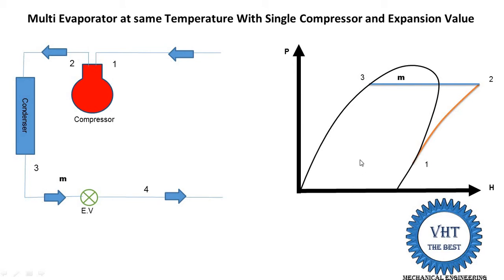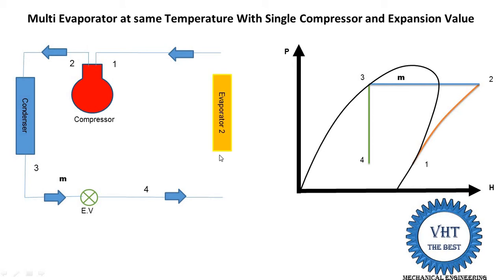Since enthalpy is on the x-axis, we draw a vertical line downward from point 3 — downward because pressure is reduced. When we take the projection of the 3 to 4 line on the x-axis, h3 equals h4, confirming they are the same. At point 4, the state of the refrigerant is low pressure, low temperature, liquid refrigerant.